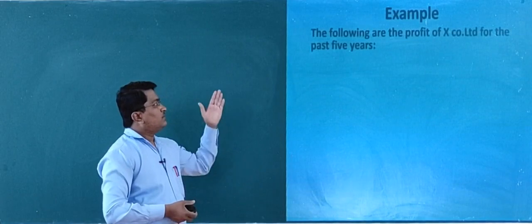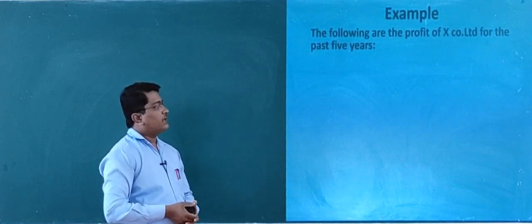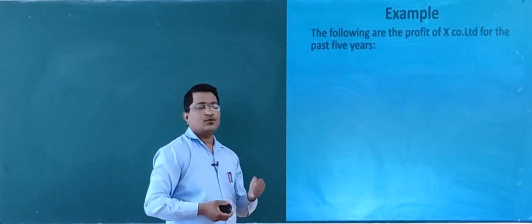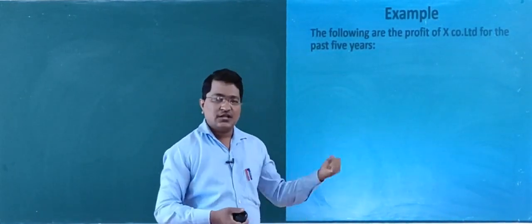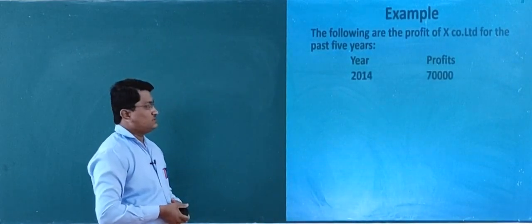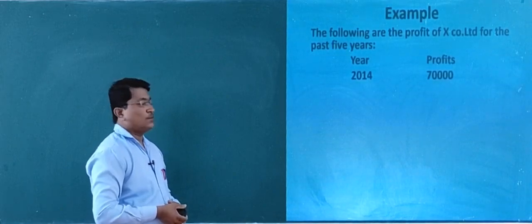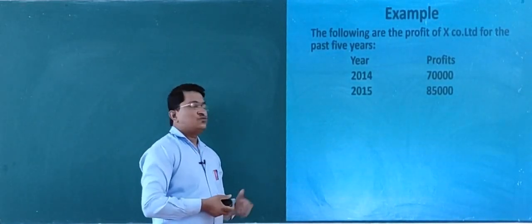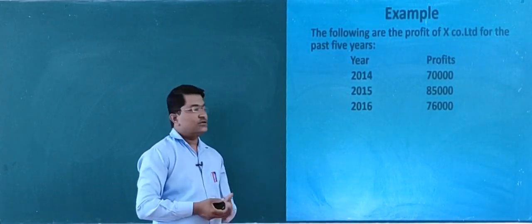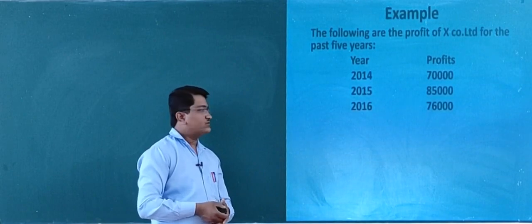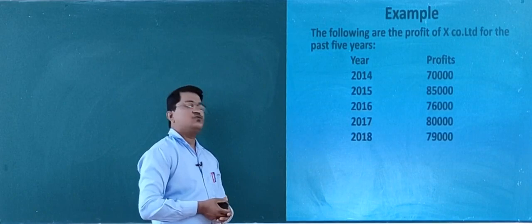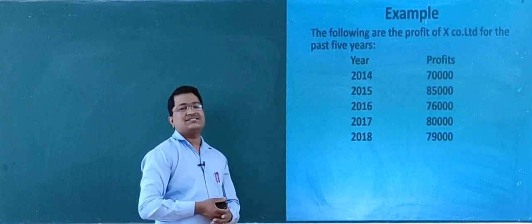So let's move to the next example for valuation of goodwill under simple average profit method. The following are the profits of X Company Limited for the past 5 years: 2014 – 70,000; 2015 – 85,000; 2016 – 76,000; 2017 – 80,000; and 2018 – 79,000.